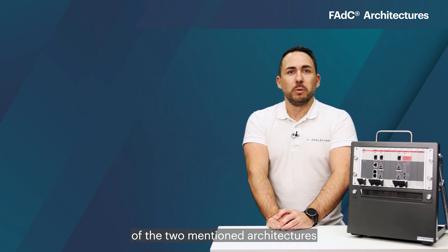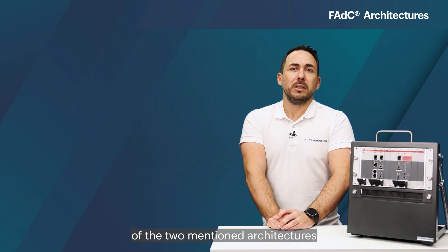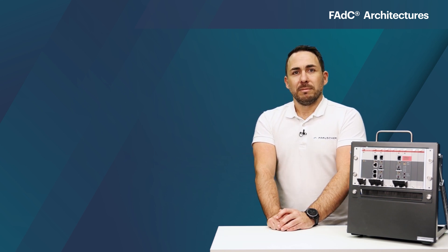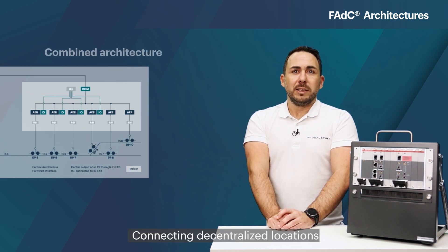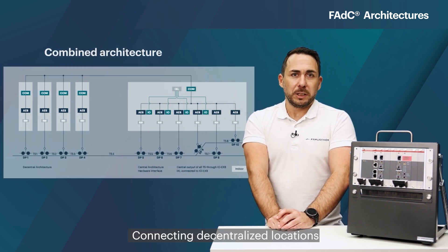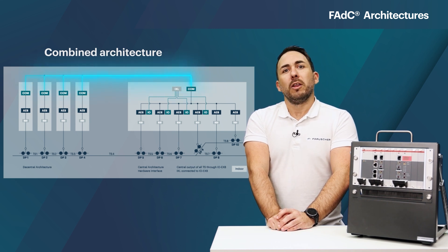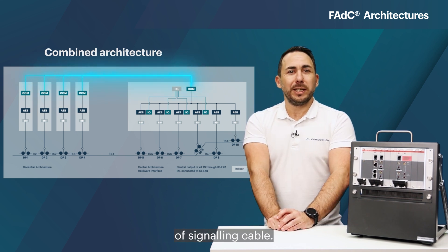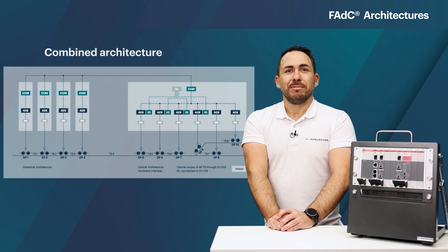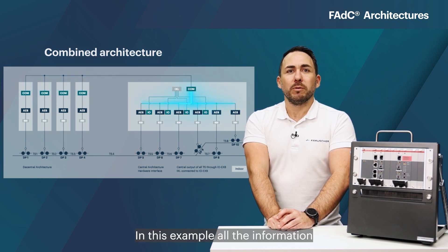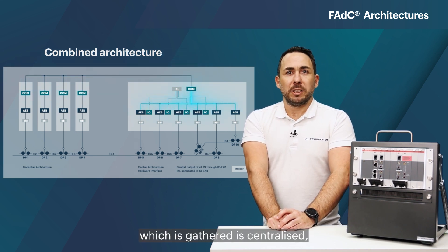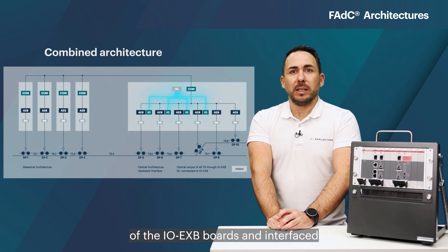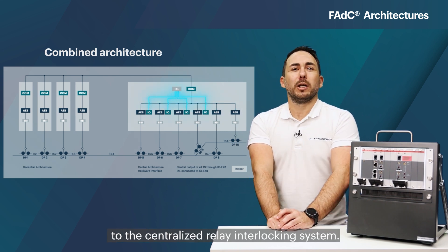A combination of the two mentioned architectures is certainly also possible. Connecting decentralized locations to a centralized location through Ethernet is a very common method of reducing the amount of signaling cable. In this example all the information which is gathered is centralized, output through relays of the IOXP boards and interfaced to the centralized relay interlocking system.